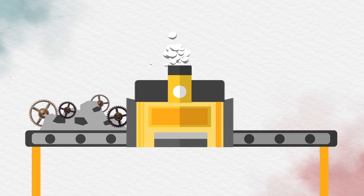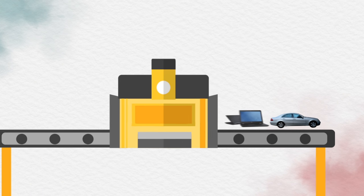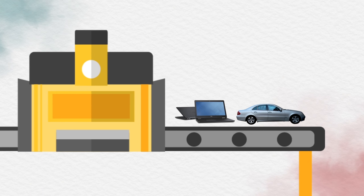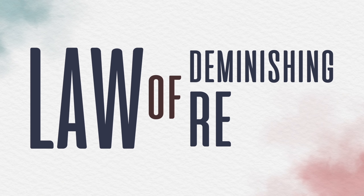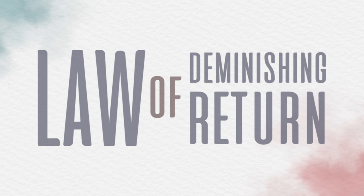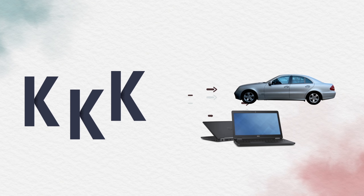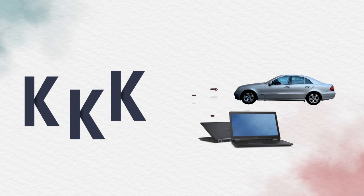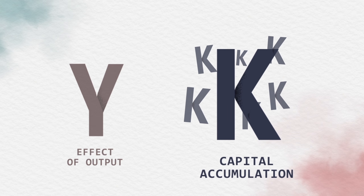Have you ever wondered why, when capital increases, the result comes out with a smaller and smaller increase in output? Because of the law of diminishing returns, which states that for each new input of capital, less and less output is produced. Additionally, we focus on the effect of output on capital accumulation.